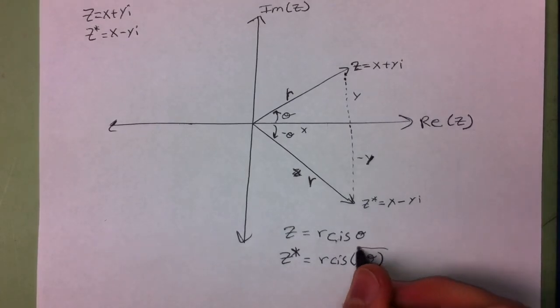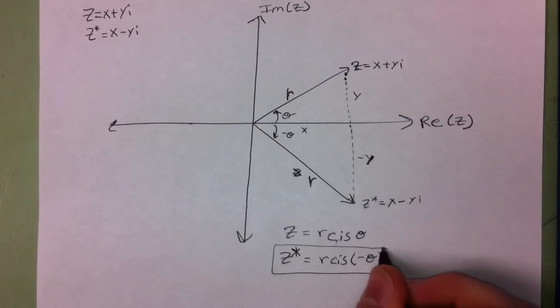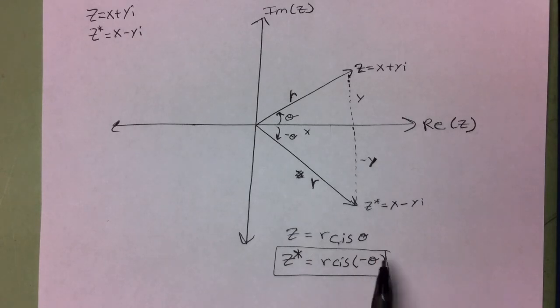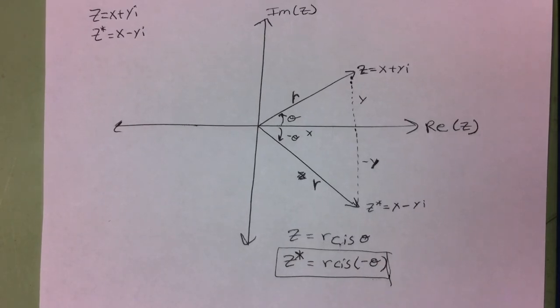So this is how you find a conjugate in polar form. You just make the angle negative, or if the angle is already negative, then you make it positive.